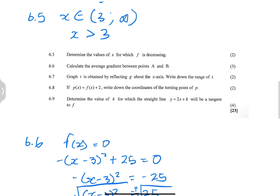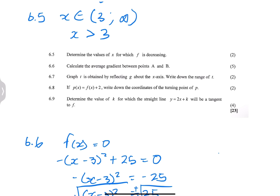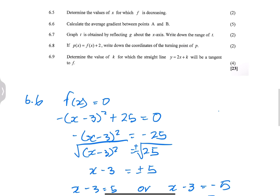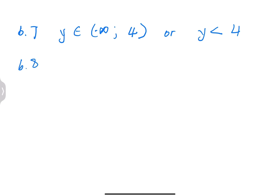If P(x) = F(x) + 2, they are shifting the parabola two units up. They ask for the coordinates of the new turning point. Every Y value increases by 2, so the turning point moves from (3, 25) to (3, 27).